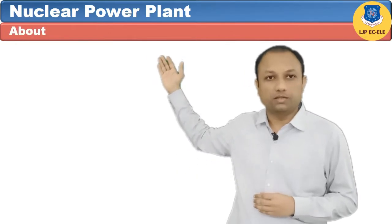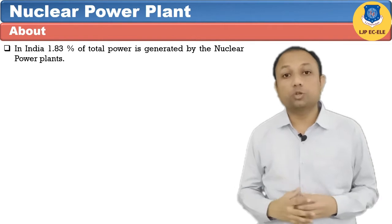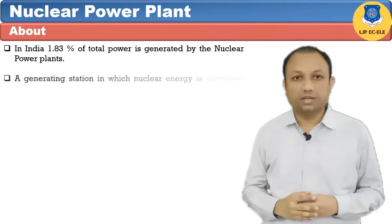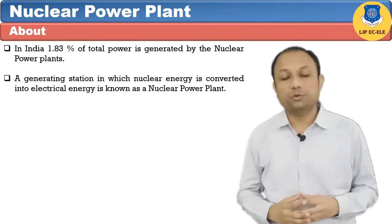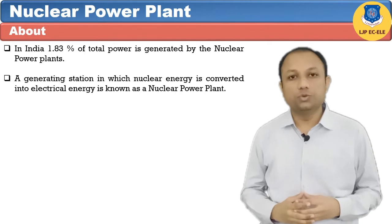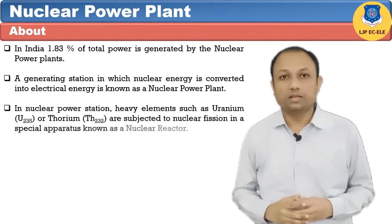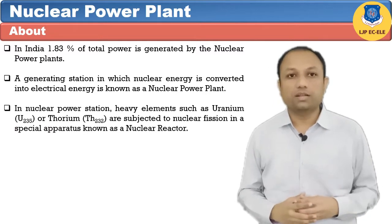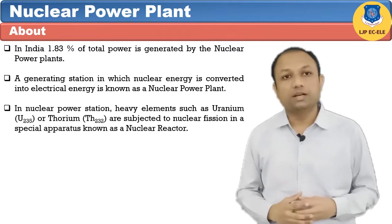Now let's discuss about the nuclear power plant. In India, 1.83 percentage of total power is generated by nuclear power plants. A generating station in which nuclear energy is converted into electrical energy is known as a nuclear power plant. In a nuclear power plant, heavy elements such as uranium and thorium are subjected to nuclear fission in a special apparatus known as a nuclear reactor.